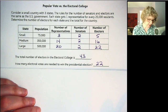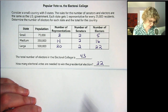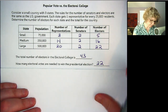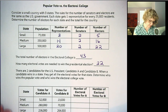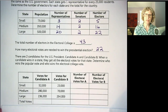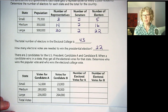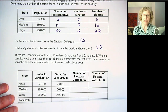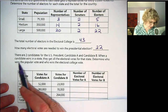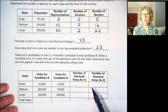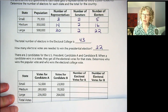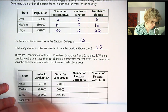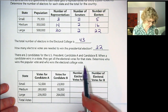Now let's say we have an election. There are two candidates for president in this country: Candidate A and Candidate B. When a candidate wins in a state, they get all the electoral votes for that state — it's winner-take-all. Most states are like this, but there are some differences in the United States. We need to determine who wins the popular vote and who wins the Electoral College vote.